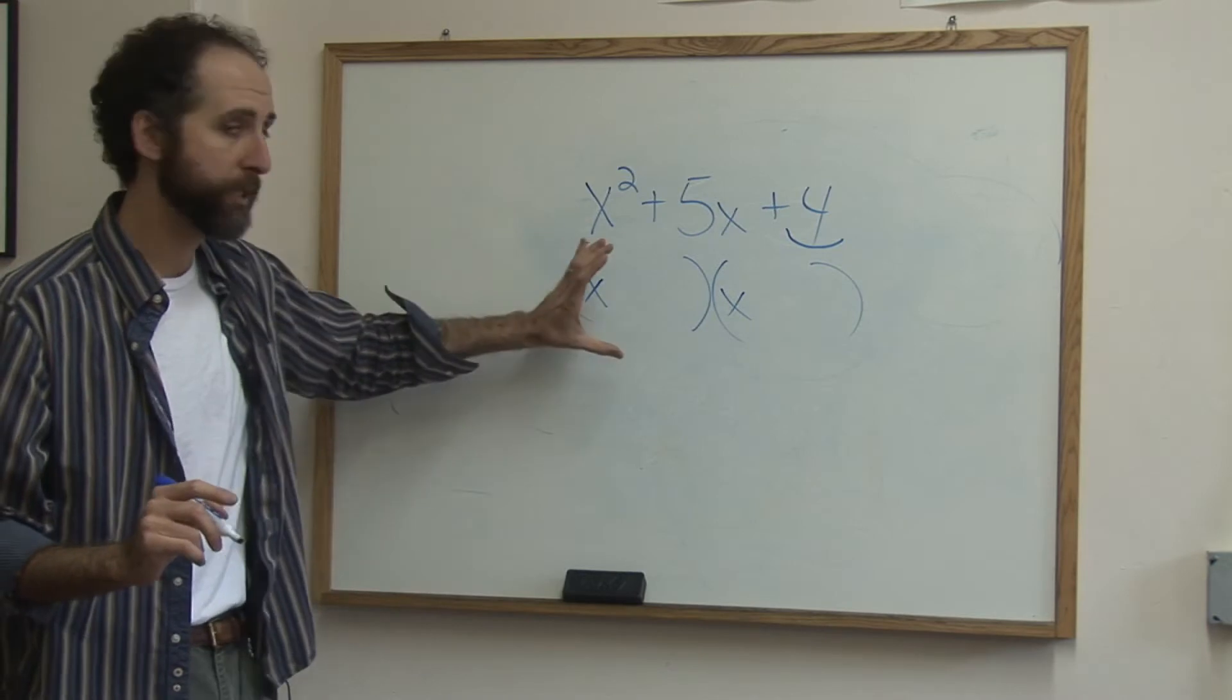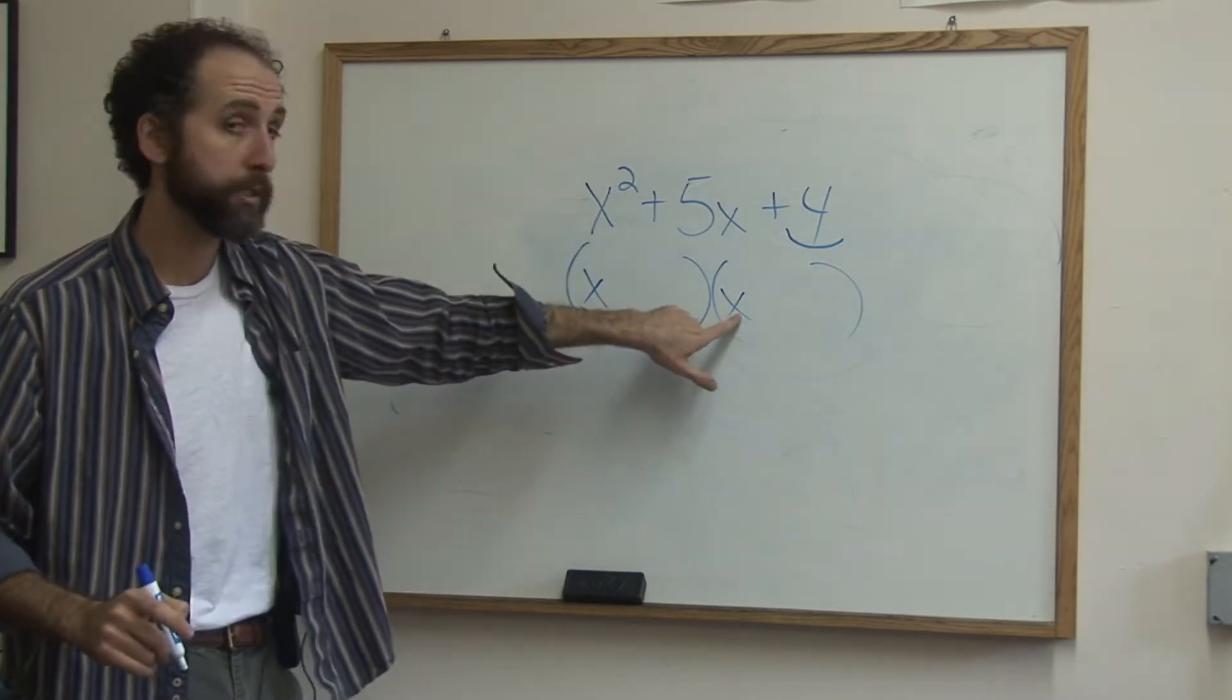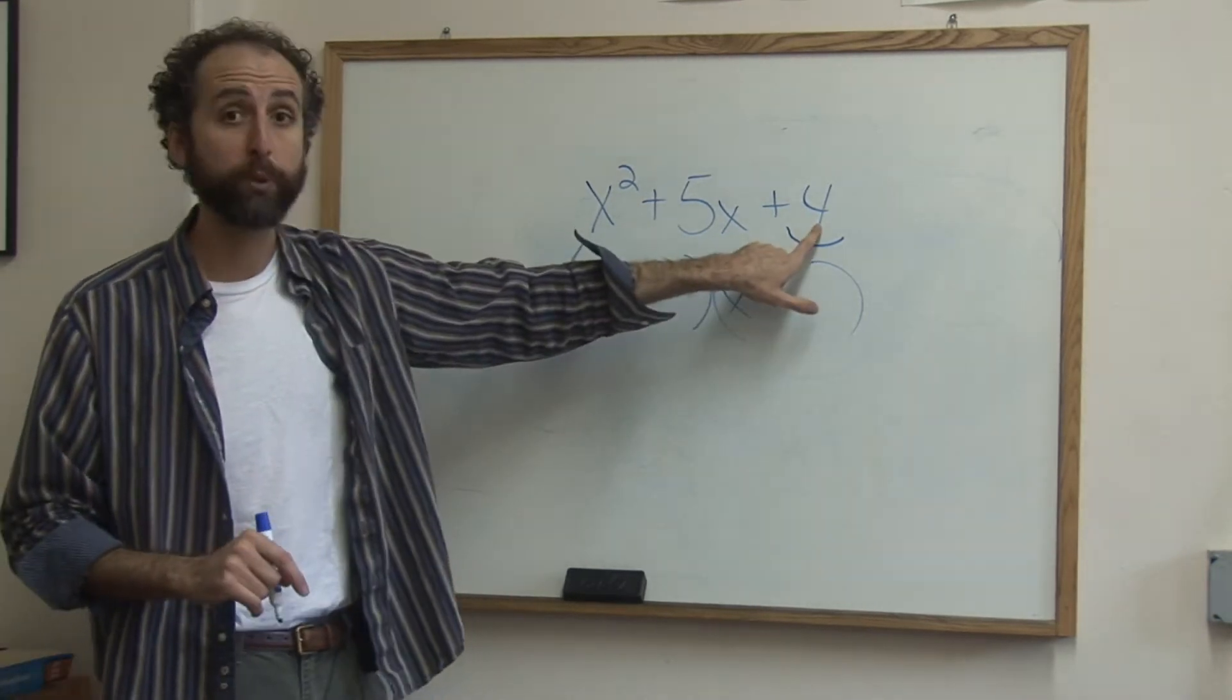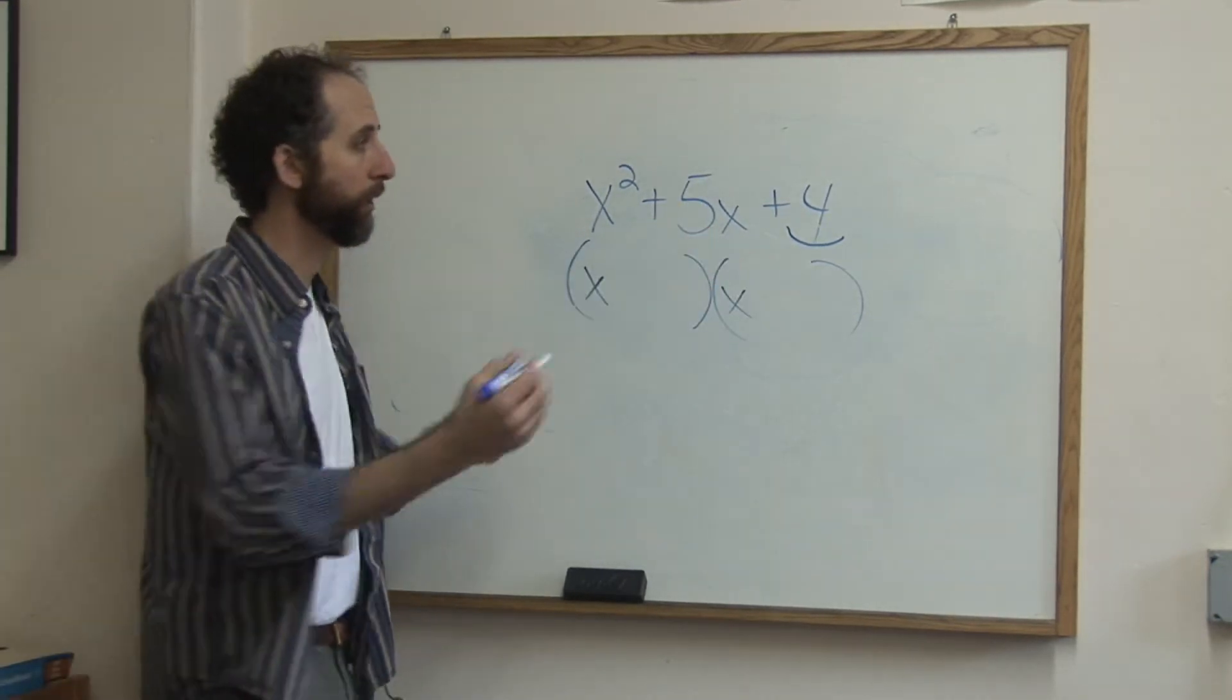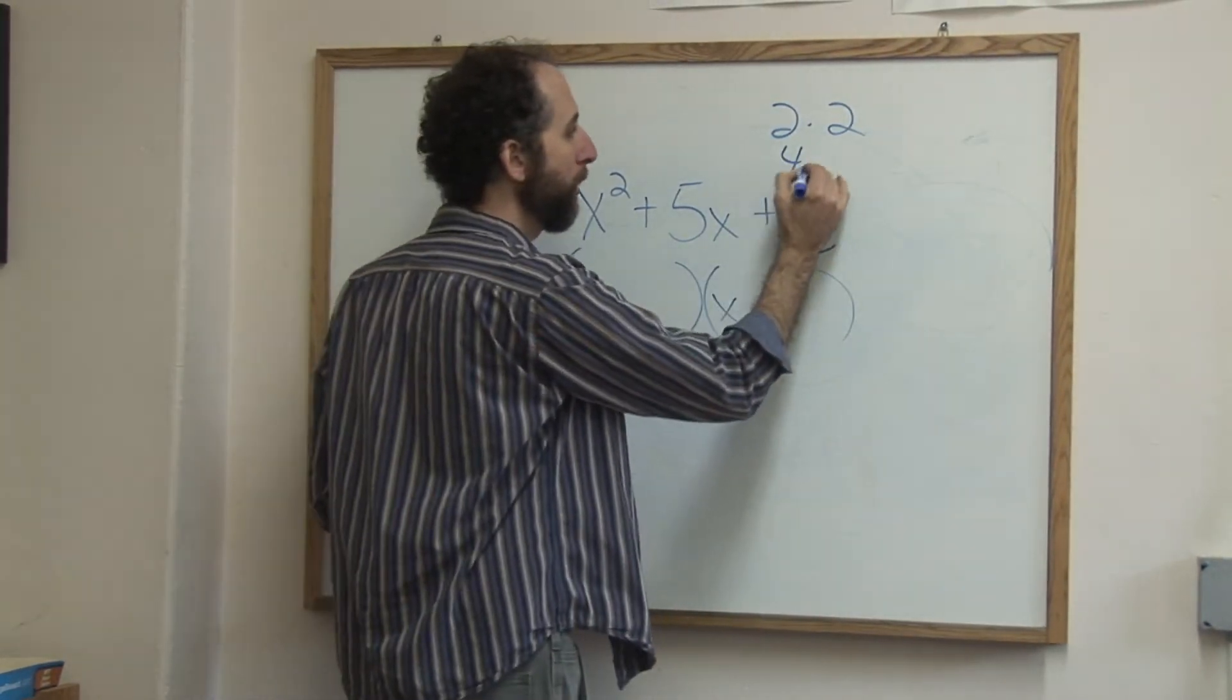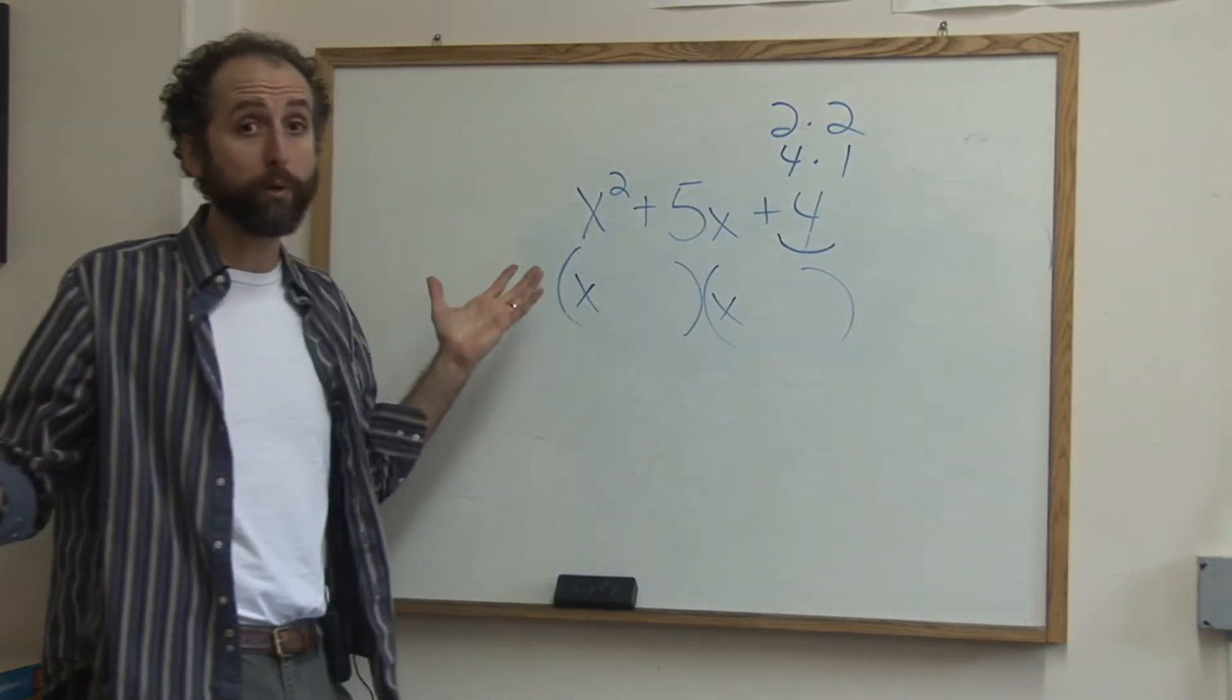Step one, draw the parentheses. Step two, x and x, assuming that there's no number here. Step three, what numbers multiply to be 4? So here's the deal, 2 times 2 is 4, or 4 times 1 is 4. Those are the only options.